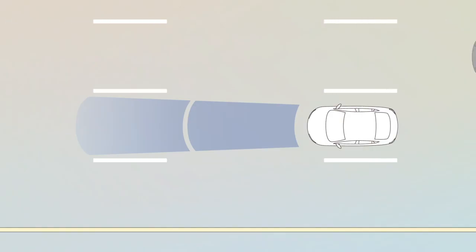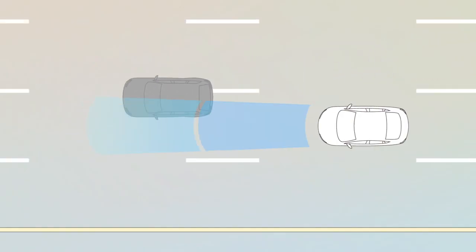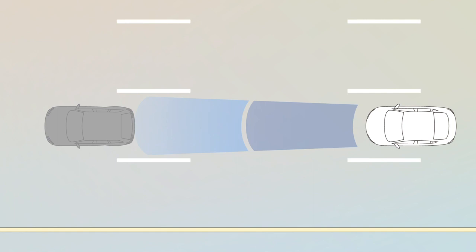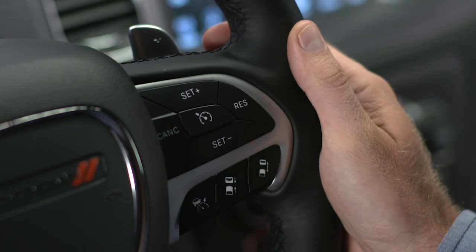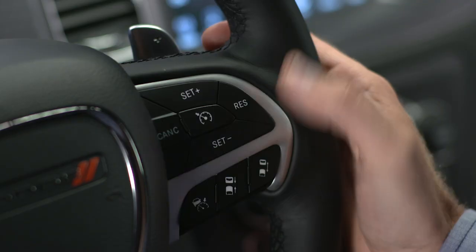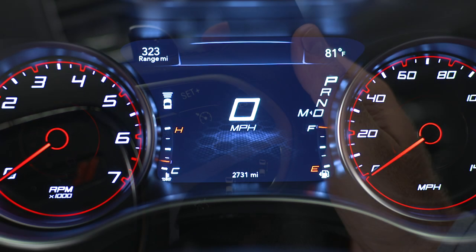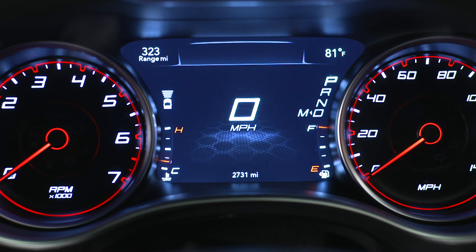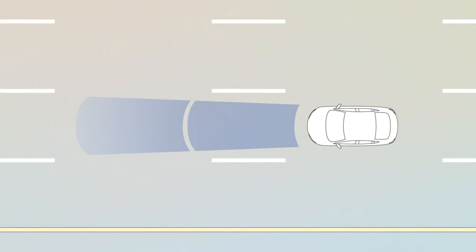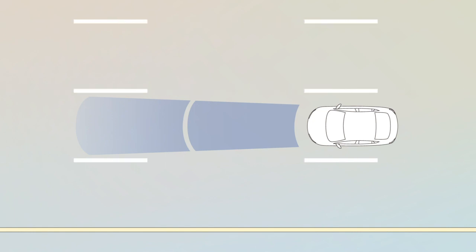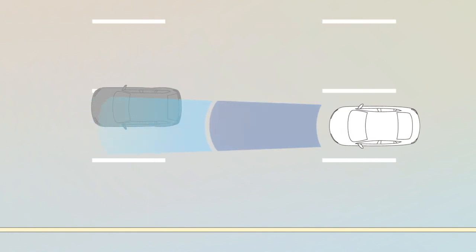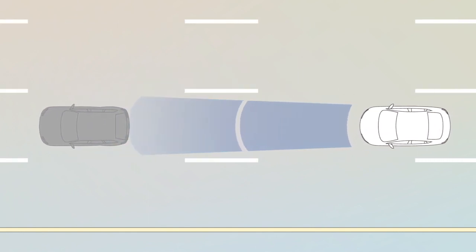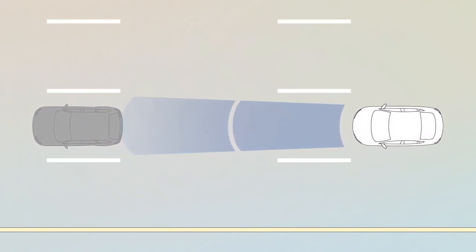The system will now maintain a set distance between you and the driver in front of you without having to constantly reset your speed. The increase and decrease distance buttons let you change the distance between you and the driver in front of you. If there's no driver ahead, your set speed will be unaffected. But when a slower-moving driver enters your lane, the system automatically adjusts your speed to maintain the distance setting.